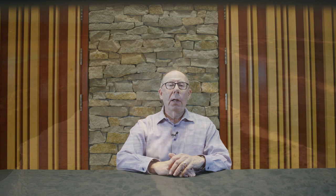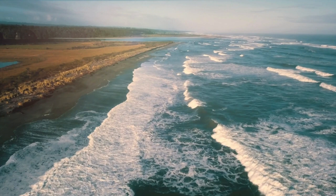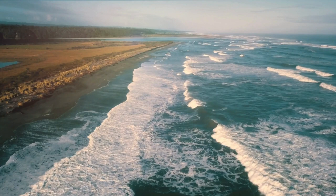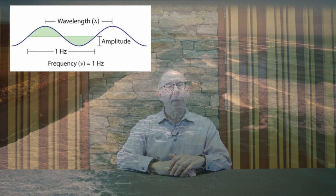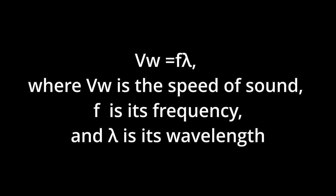Ocean waves are a great analogy for thinking about sound waves. At the ocean shore, watch the waves breaking in — you can count how many waves hit the shore per minute; that's the frequency. Or you can measure the distance between the peak of one wave and the next; that's called the wavelength. The height of the waves is the amplitude — in music, that's the loudness. Wavelength is a sort of reverse of frequency: as frequency goes up, wavelength goes down. Multiply them and you get the speed of sound, which is constant as long as you stay in the same place.